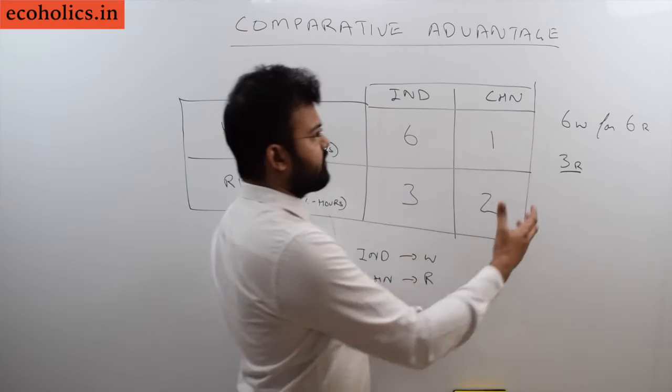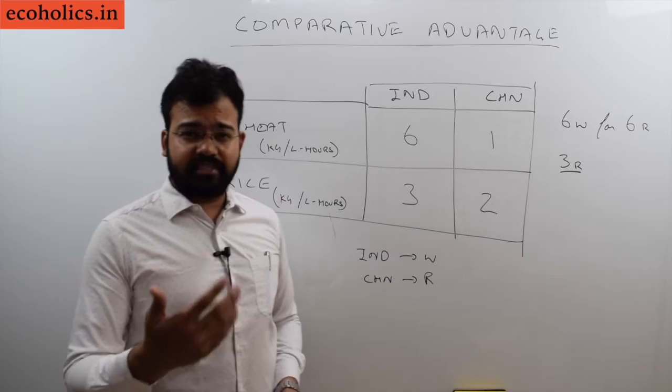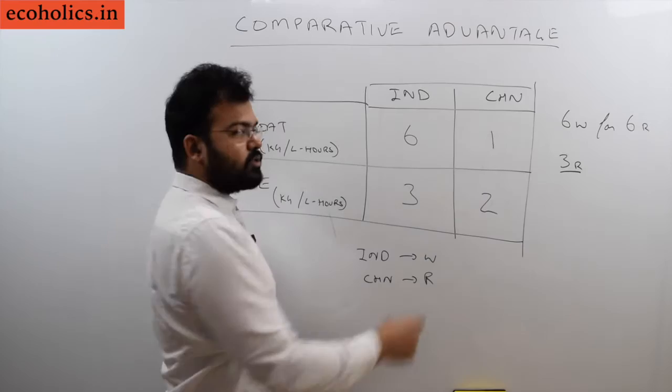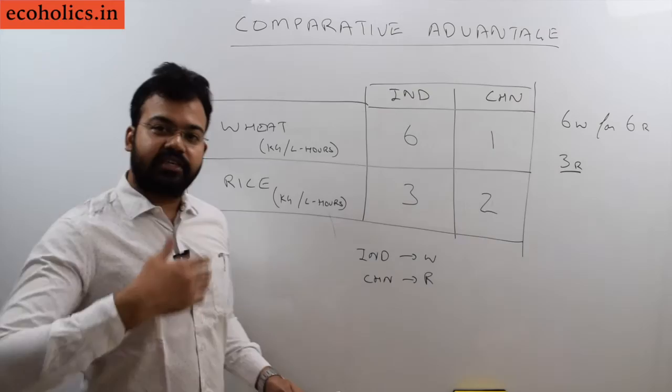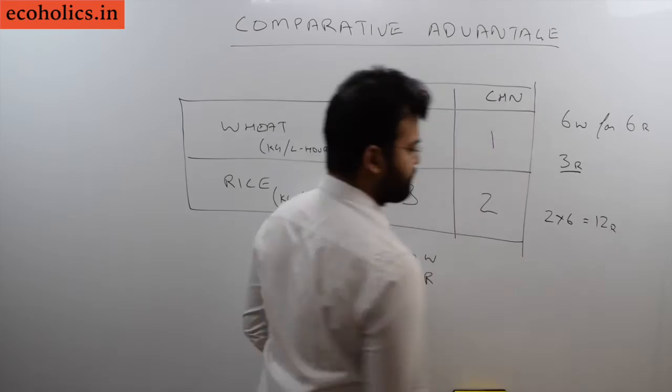Suppose if China was not engaging in trade with India and was not importing 6W from India, what happened? China would have been producing 6W at their domestic economy. They would devote 6 working hours of labor to wheat. After international trade, they can devote 6 labor hours to rice. It means 2 into 6 labor hours, so they are able to produce 12R. This is how we can trade after international trade.